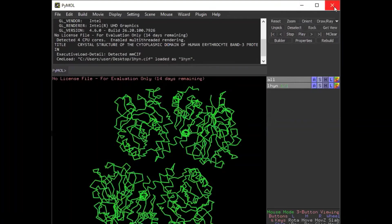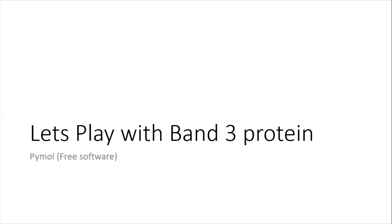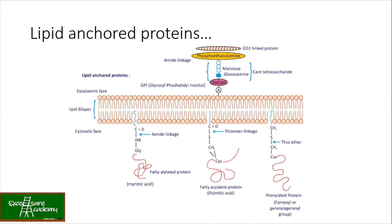Now let's talk about the lipid-anchored proteins. You have the lipid bilayer and different types of fatty acid chains attached: GPI (glycosyl phosphatidylinositol), myristic acid, palmitic acid, and the farnesyl or geranylgeranyl group. These are the different lipids present in the membrane surfaces.